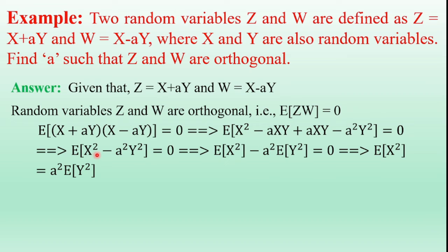On LHS side, applying expectation property: expectation of X square minus a square expectation of Y square equals zero. This term is going to the RHS side. We have expectation of X square equals a square expectation of Y square.